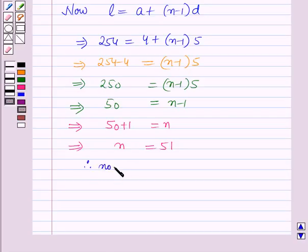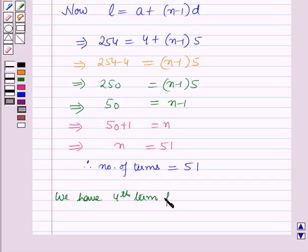Therefore, the number of terms in the given AP is equal to 51. Now since there are 51 terms in the given AP, the 4th term from the last is the 48th term.